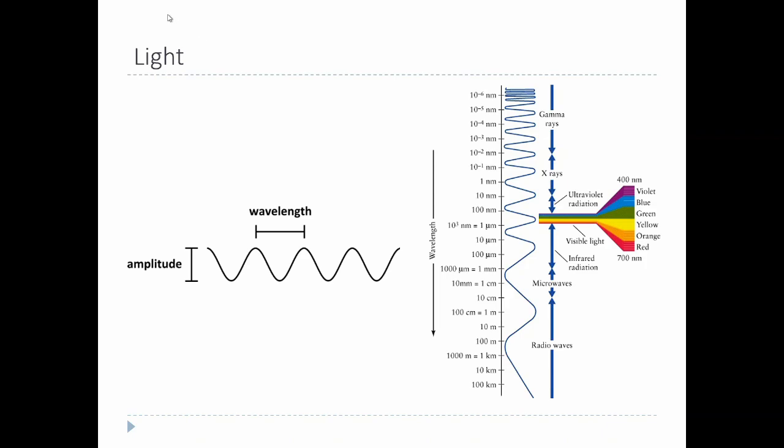The way your book does it, they split the visual system up into two chapters. This deals with the eye, and then in the next chapter we'll talk about the visual system in the brain. Before we talk about the eye, we have to talk about light.